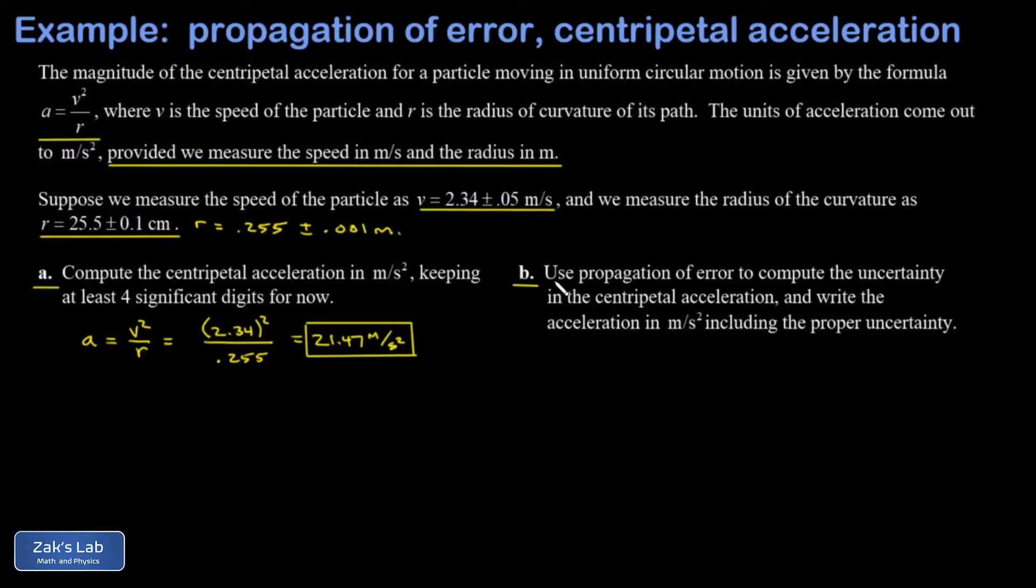Part B is the real meat of the problem. I want to use a propagation of error formula to compute the uncertainty in the centripetal acceleration. I have a that's proportional to v squared and r to the negative one if I write that one over r in terms of exponents.